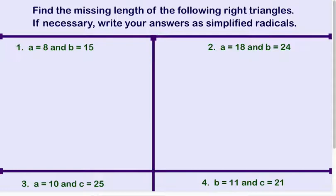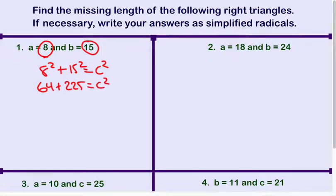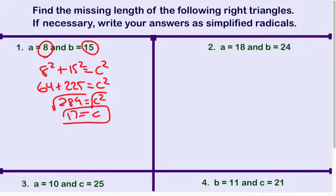Find the missing lengths of the following right triangles. If necessary, write your answers as simplified radicals. So A is 8, B is 15. So that would be 8 squared plus 15 squared equals C squared. So that's 64, that's 225. So all that together is going to be 289. So square root of 289 is nothing more than 17. So this would be a Pythagorean triple.